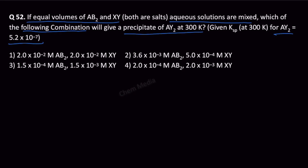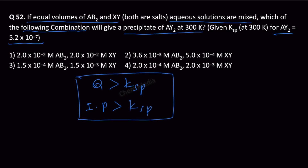We know that when the reaction quotient is greater than the solubility product, then a precipitate will form. The reaction quotient in this case is the ionic product. If the ionic product is greater than the solubility product, then precipitation will occur.